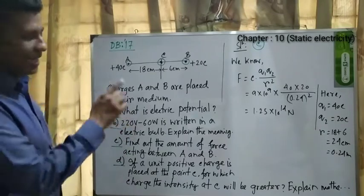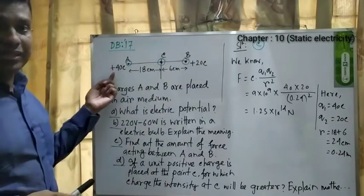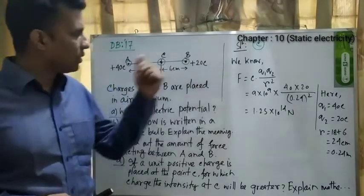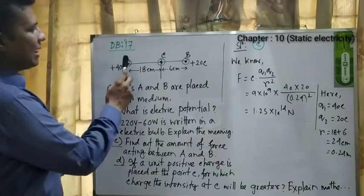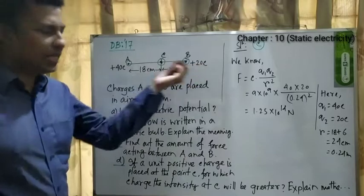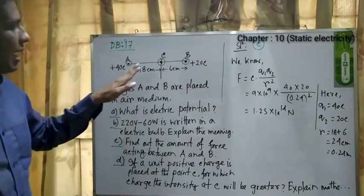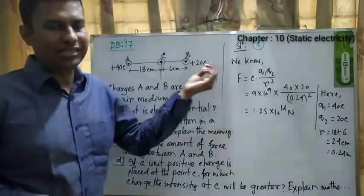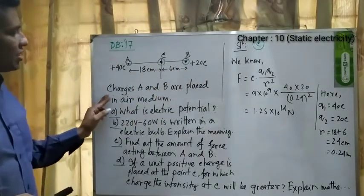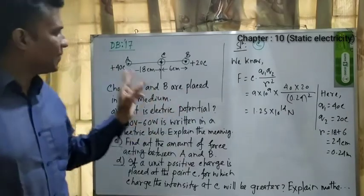There are two charges A and B. The first charge A is +40 Coulomb and the second charge B is +20 Coulomb. C is a point charge at the middle of A and B. The distance between A and C is 18 centimeters and the distance between B and C is 6 centimeters. Charges A and B are placed in air medium.